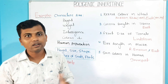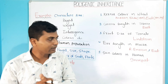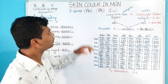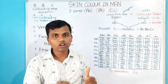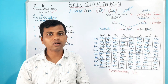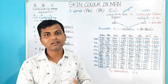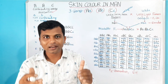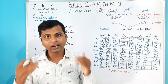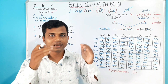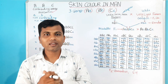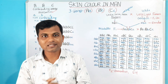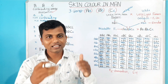Now, we will explain Polygenic Inheritance in detail by taking the skin color in human. The skin color of human beings depends upon the amount of melanin pigment present under the skin. The individual having more amount of the melanin pigment appears very dark, whereas the person having less amount of the melanin pigment appears lighter. So, the concentration of the melanin pigment in skin determines human coloration.